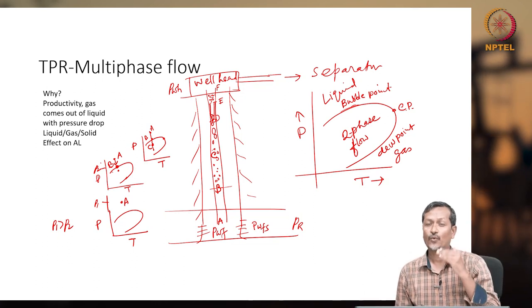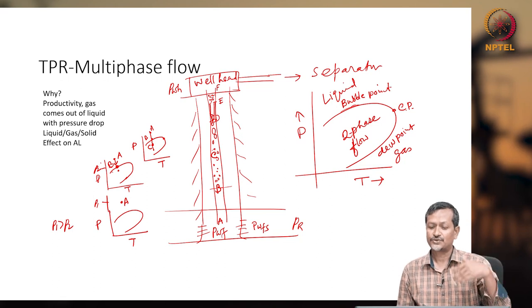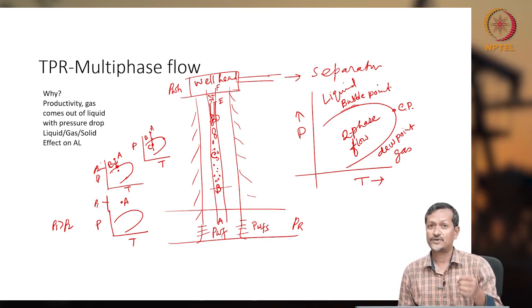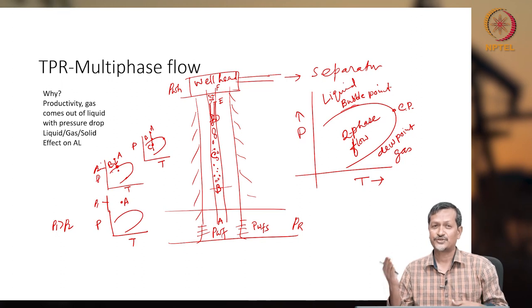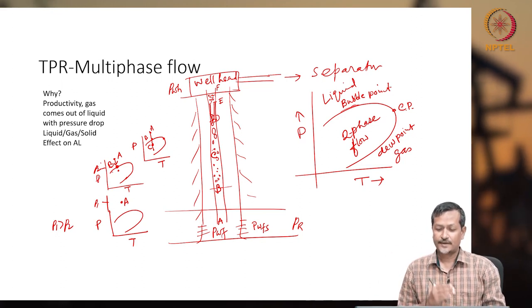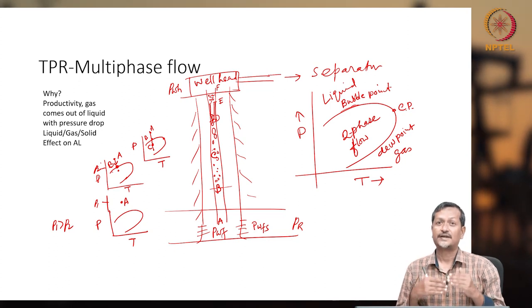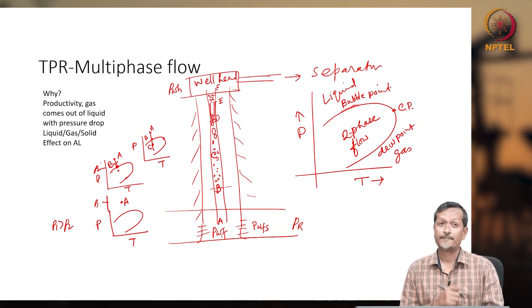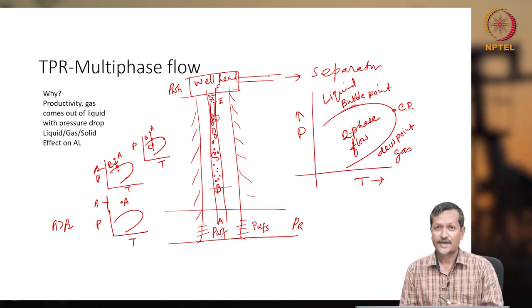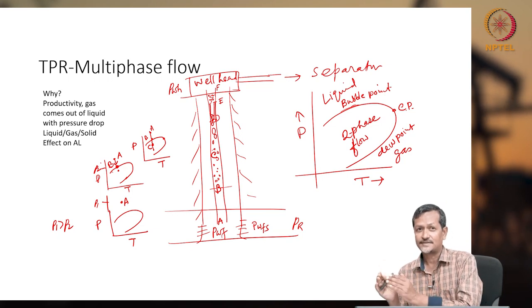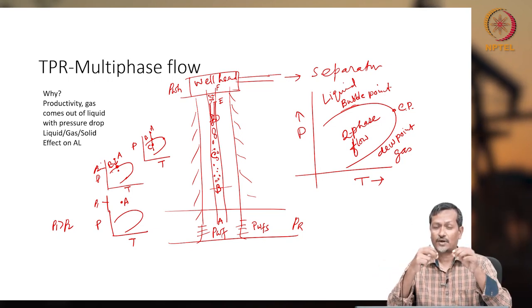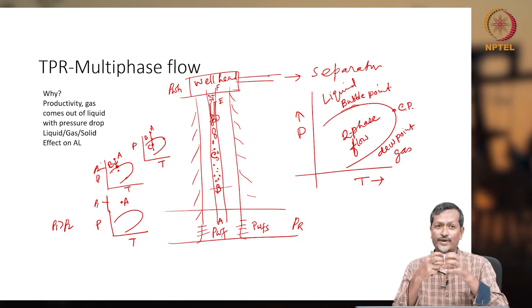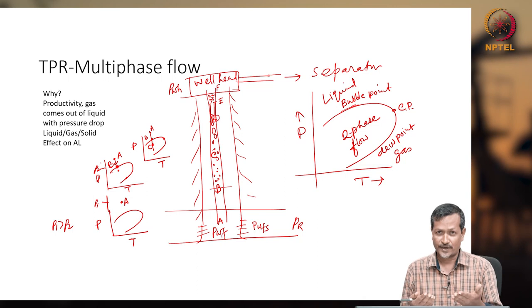That is how your fluid changes from reservoir to the wellhead. When thinking about water and gas mixture in normal piping applications, the fluid property may be different. But in wellbore applications, the fluid is different because it has different Rs (solution gas-oil ratio), formation volume factor, and GOR. That is why wellbore multiphase flow is a little different from normal air-water multiphase flow — it has different viscosity, water-oil mixtures, and sometimes sand, creating a very complex flow phenomenon in the wellbore.